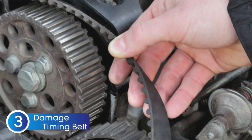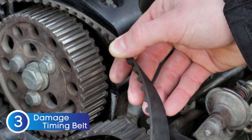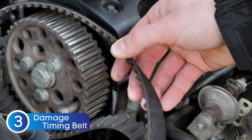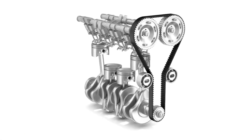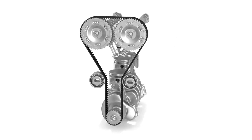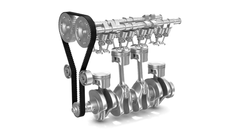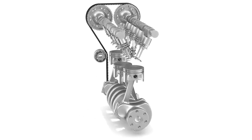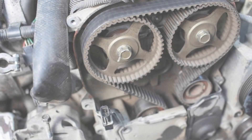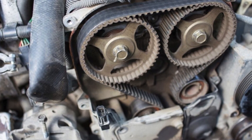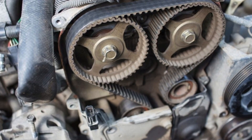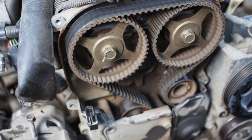The third cause is a faulty timing belt or chain. The camshaft is driven by the crankshaft through either a timing belt or a timing chain. If that belt or chain jumps a tooth or becomes misaligned — even slightly — it throws off the precise synchronization between the camshaft and the crankshaft. Since the camshaft position sensor relies on accurate timing to send signals to the ECU, any misalignment can mimic a sensor failure and trigger the P0348 code.